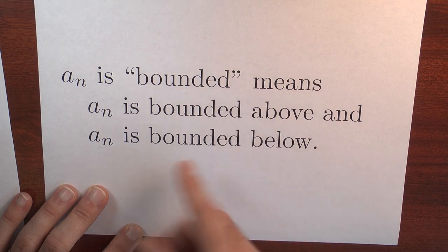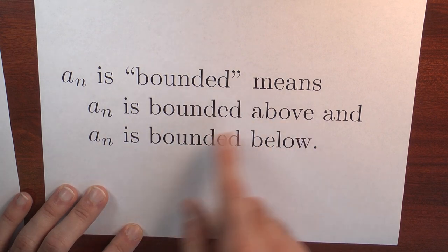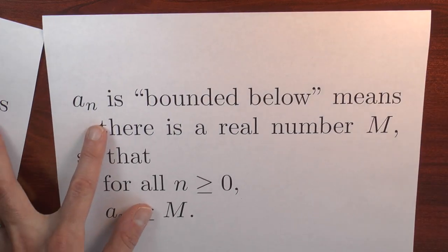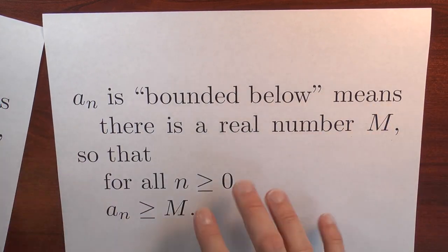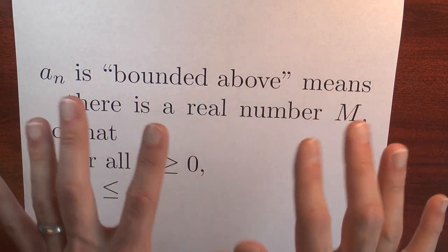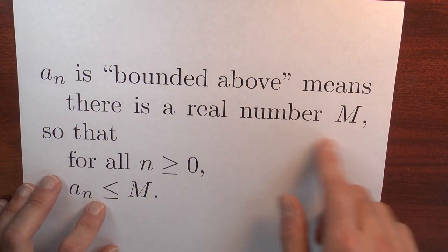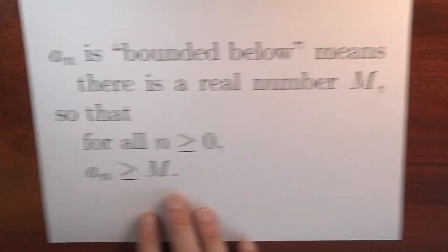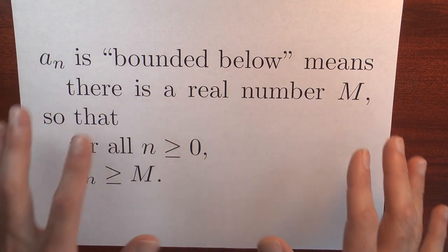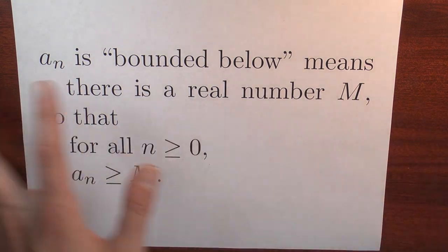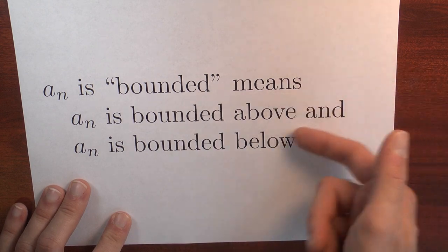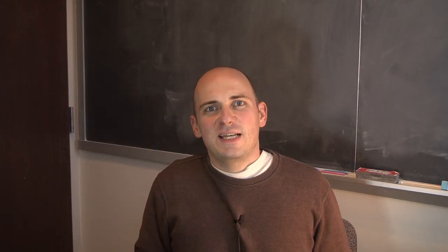A sequence is bounded exactly when it's bounded both above and below. It's worth pointing out that the definition for bounded below involves a number m, and the definition for bounded above also includes a number m, but it's very unlikely that the upper bound and the lower bound are the same — unless the sequence is just a constant sequence. In general, a bounded sequence is going to have a different upper bound and lower bound. So we've got our precise definitions.